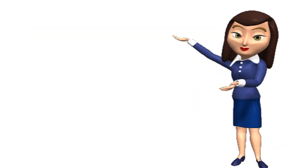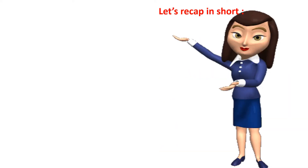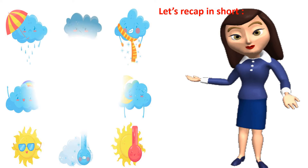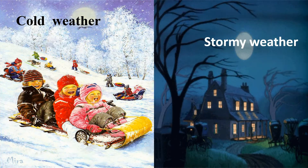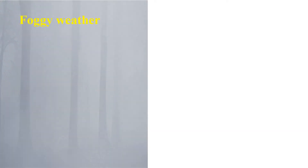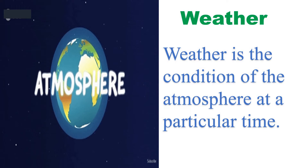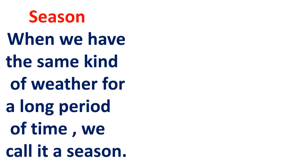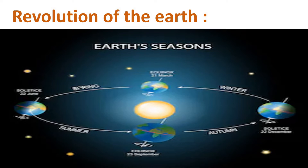Today we are going to solve textual exercises, but before starting let's recap the chapter in short and cover all the topics. First, we have learned about different weathers. Weather can be cold, stormy, foggy, sunny, etc. Weather is the condition of the atmosphere at a particular time. We have also learned about seasons — when we have the same kind of weather for a long period of time, we call it a season. We get different seasons due to the revolution of the earth.